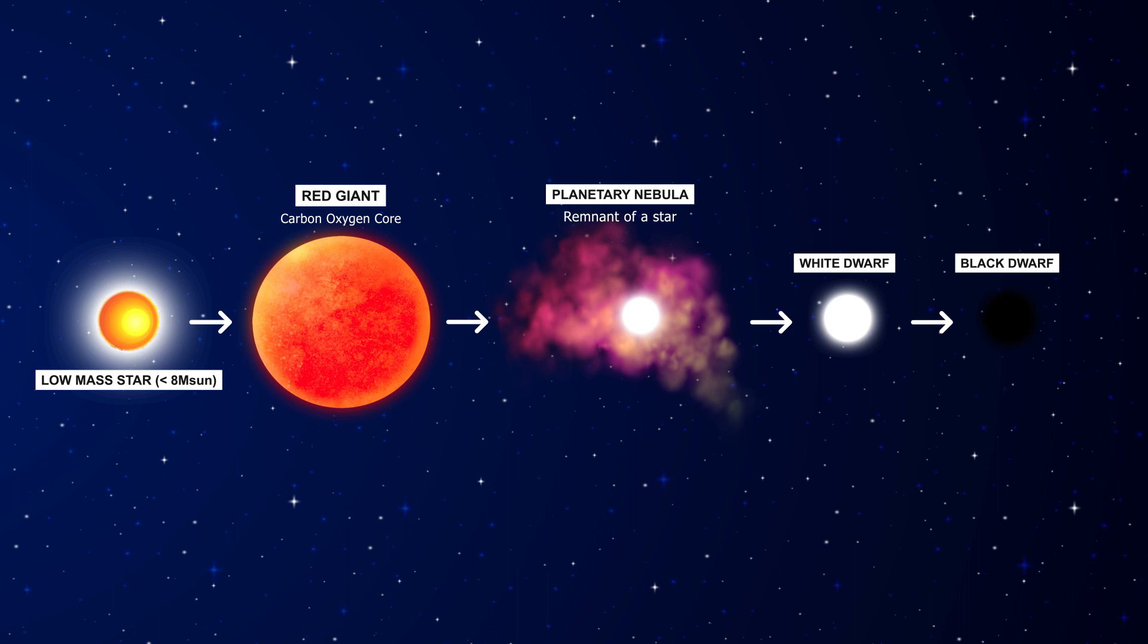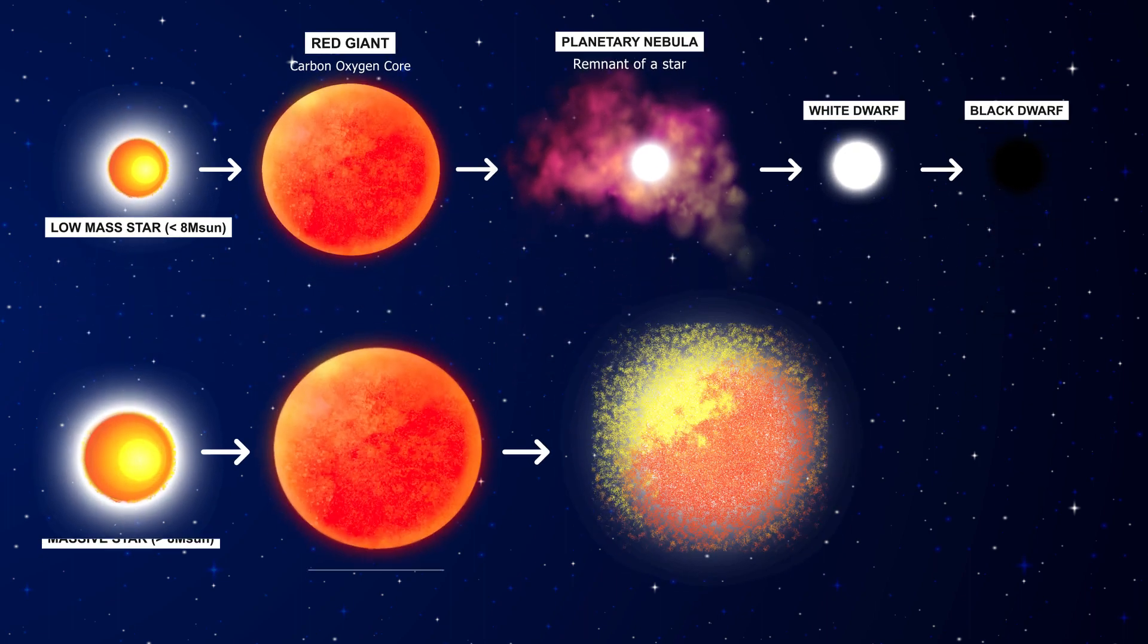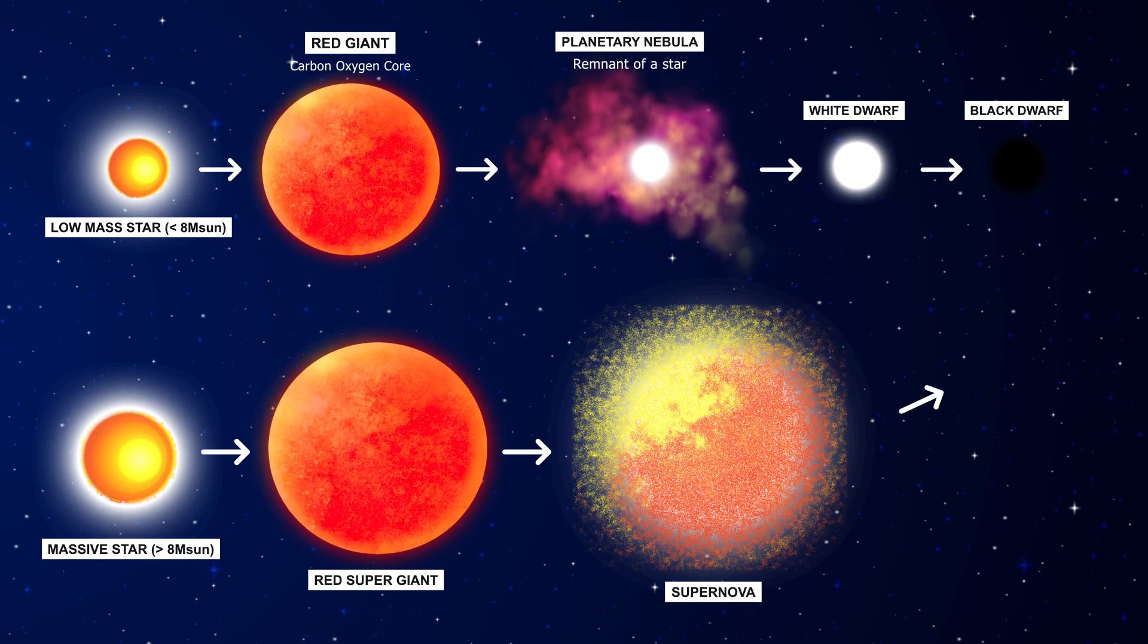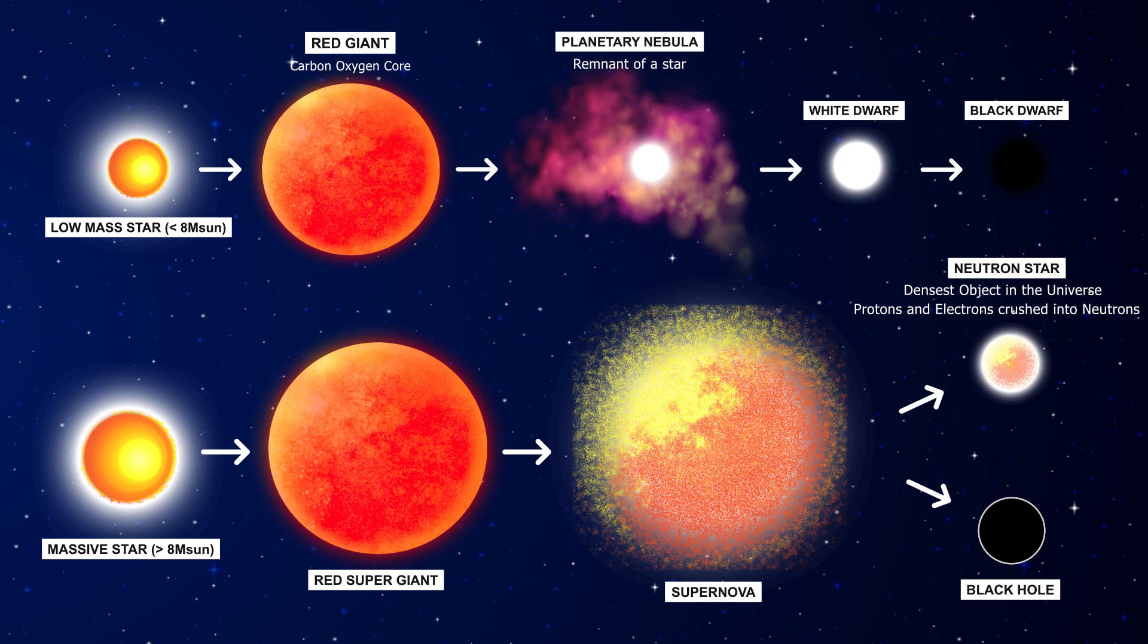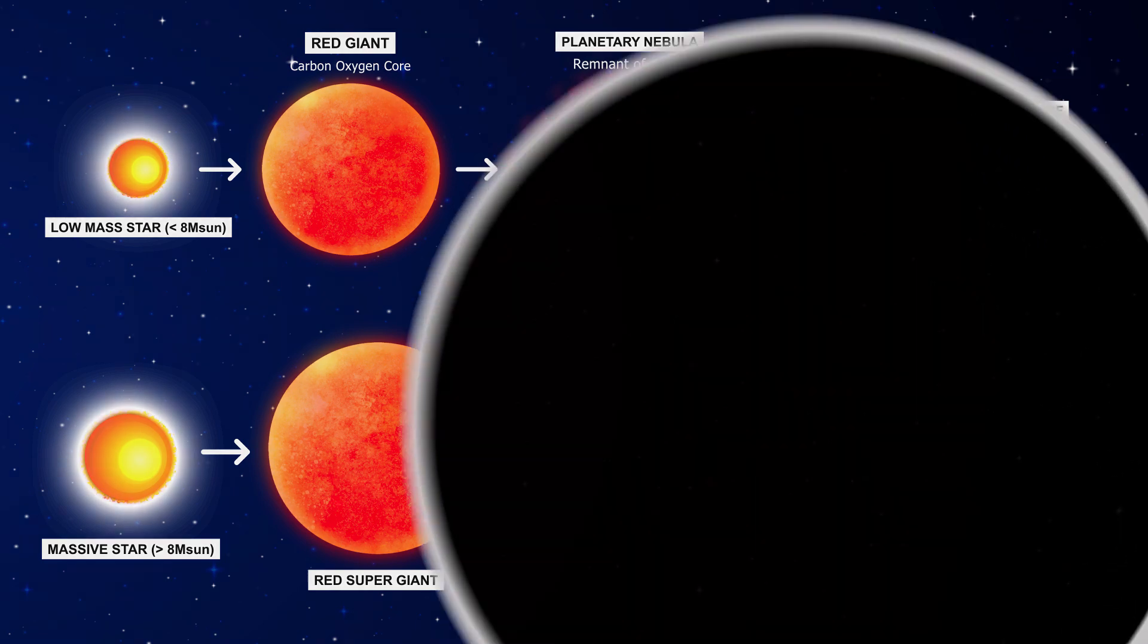So depending on how much hydrogen you fed it initially, it would either die as a black dwarf, or either it will go supernova and subsequently a neutron star, or probably collapse under its own gravity and form a black hole. In any case, seeing your own creation die or go rogue is very painful. Thankfully, I'm not going to live a billion years to witness it. Or are you?